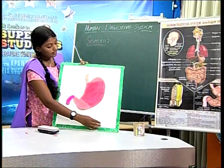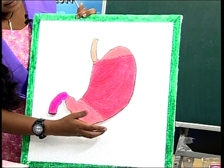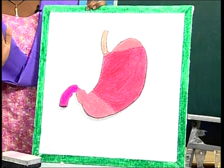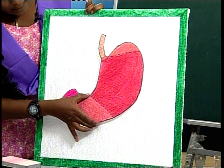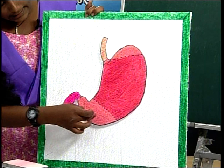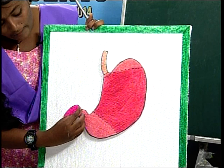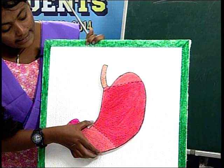The stomach is a J-shaped, distensible, bag-like structure. It is distinguished into three parts: the anterior cardiac region, the middle fundic region, and the posterior pyloric region. The pyloric region leads into the first part of the small intestine through an aperture called the pyloric aperture, which is guarded by a sphincter called the pyloric sphincter. This regulates the entry of food from the stomach into the small intestine.